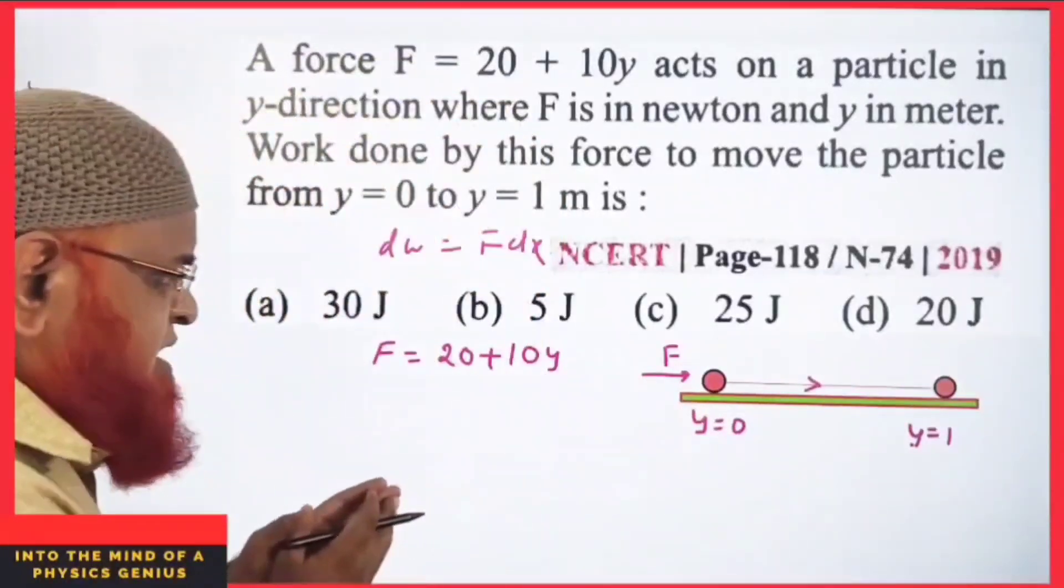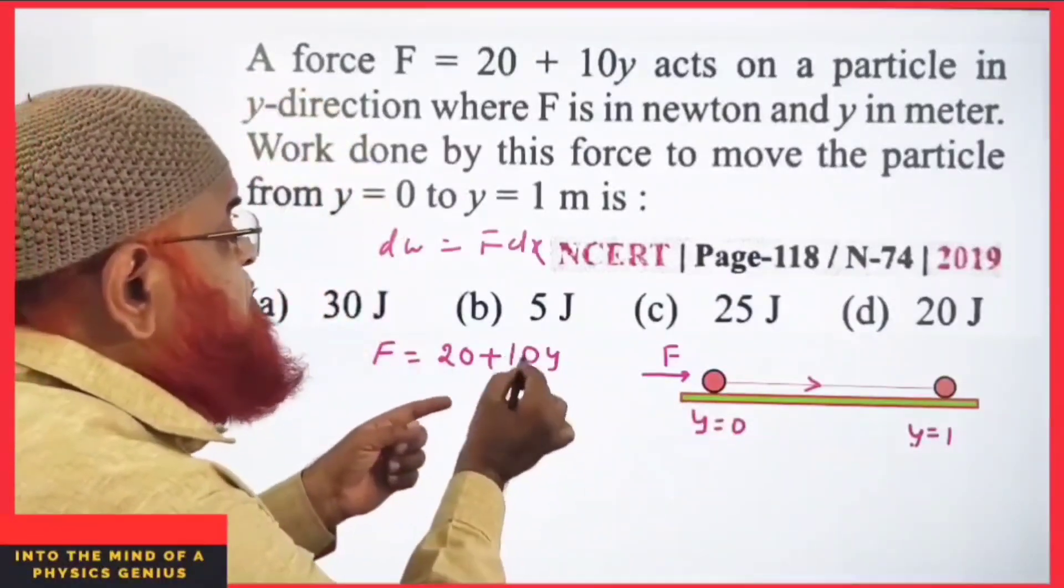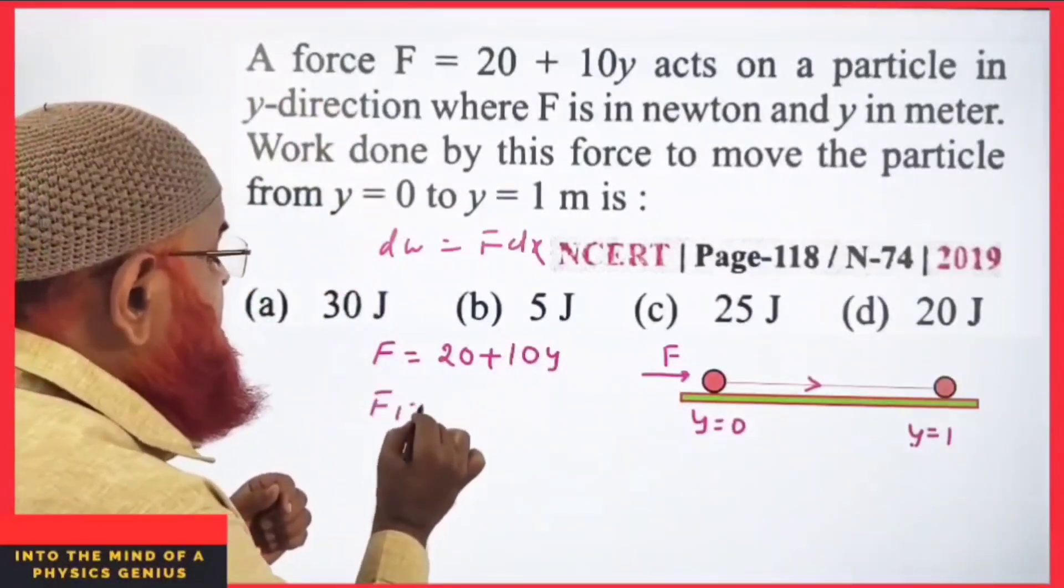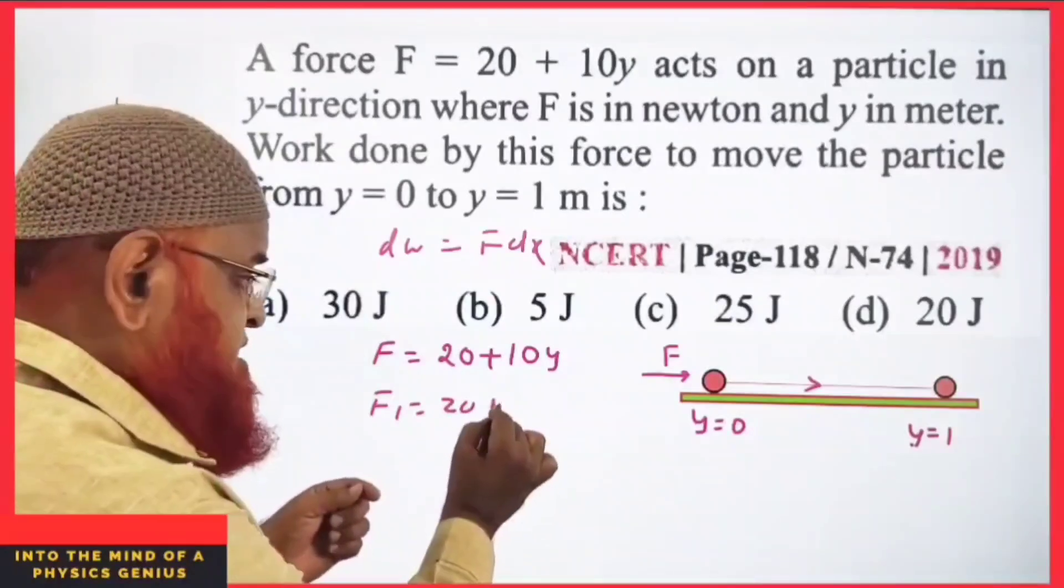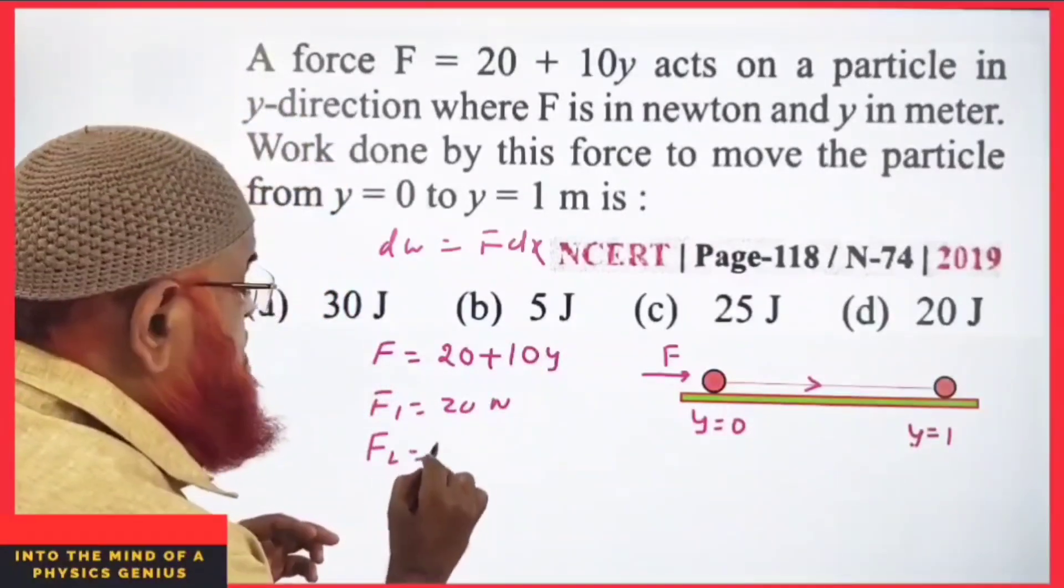You keep y = 0 here, then you get F = 20 newtons. Then you keep y = 1, and you get F₂ = 20 + 10 = 30 newtons.